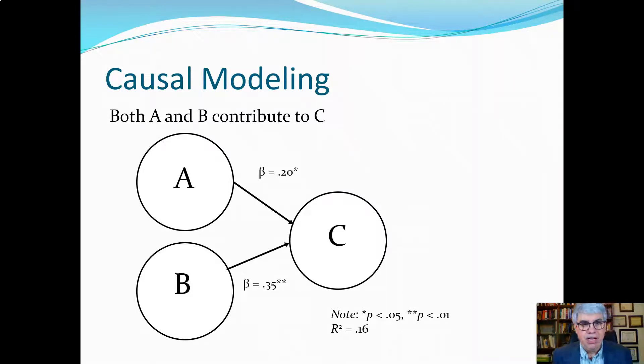So here we have for this type of job, A was related to C with a beta of 0.20 and we put a star by it. We're using the classic notation of one star is p less than 0.05, two stars is less than 0.01. If we had really strong correlations we'd have three stars, p less than 0.001.